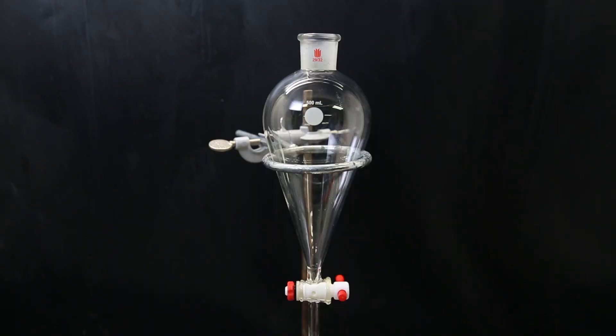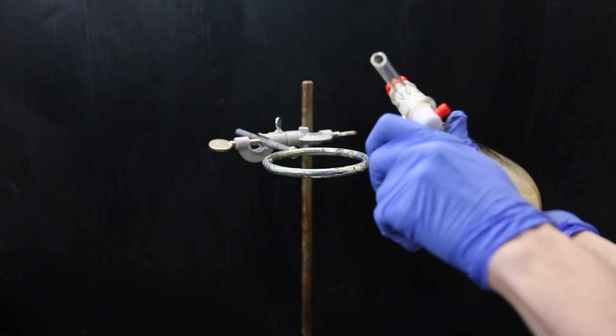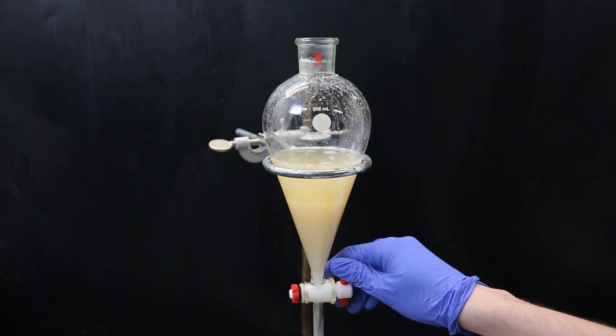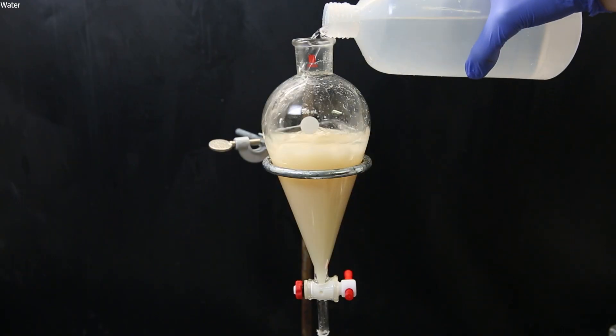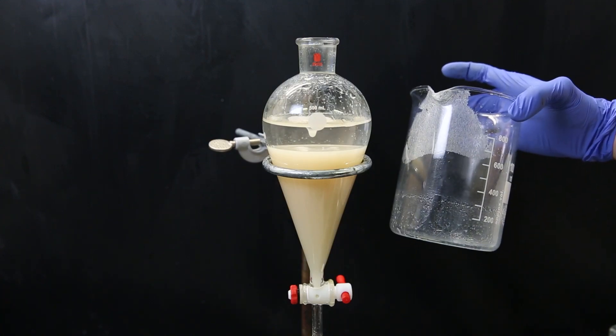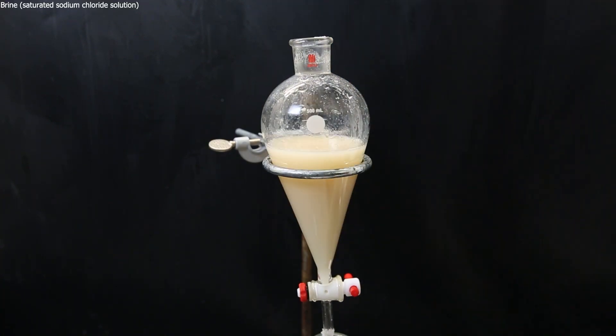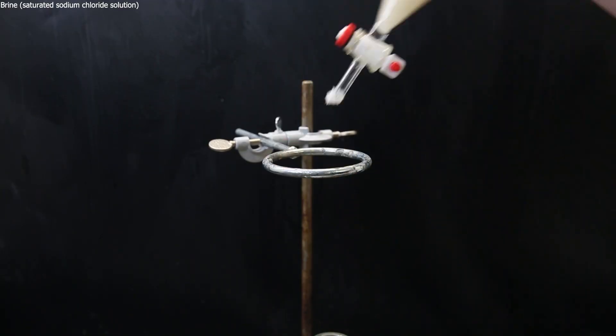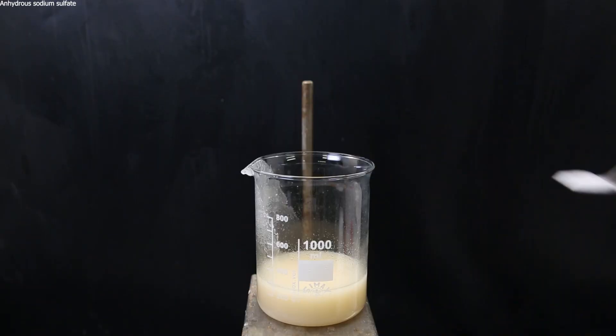And then set up a separatory funnel and pour in all of the filtrate water mixture and mix them around. And we see the dark color disappear. I return the organic layer and wash it once with more water. We can already see the product crystallizing in the beaker from some evaporating residual solvent. I separate the layers again and then wash the organic phase once with some brine, which will take out most of the remaining water. I then take the organic phase and add some anhydrous sodium sulfate to it to absorb any droplets of water.